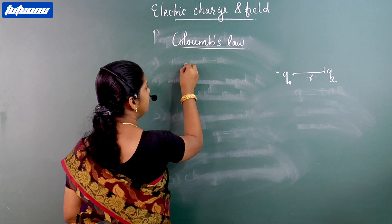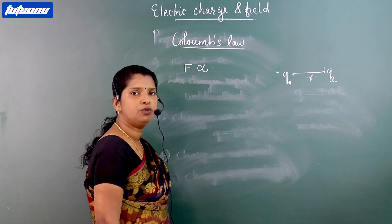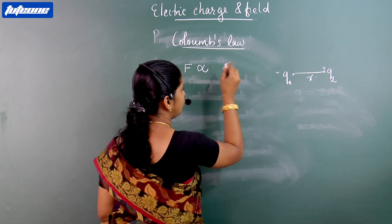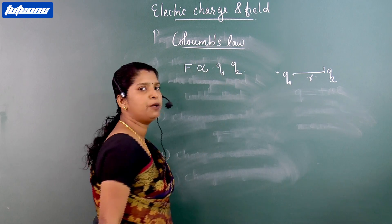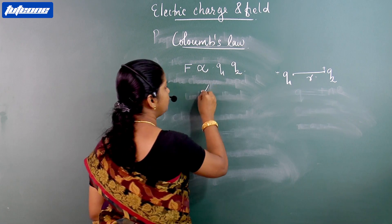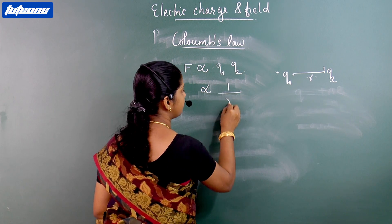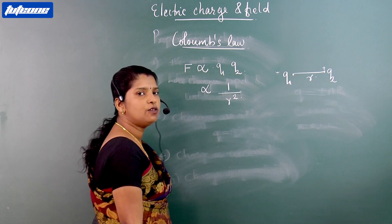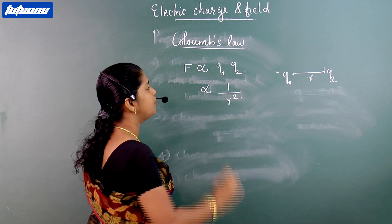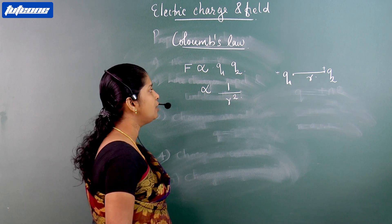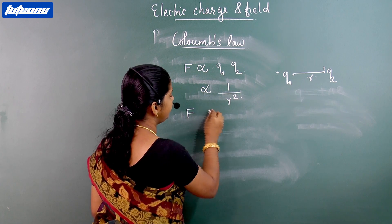According to Coulomb's law, this force of attraction or repulsion is directly proportional to the product of the magnitude of the two charges Q1 and Q2, and inversely proportional to the square of the distance. So F is proportional to Q1·Q2, and F is inversely proportional to R squared. Combining these two equations,